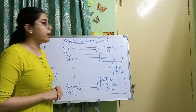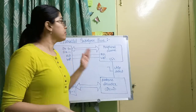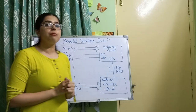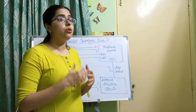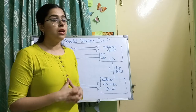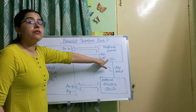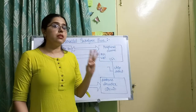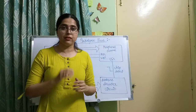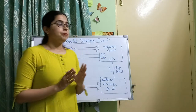If the data bus width is eight, then eight parallel lines are connected between the microprocessor and the peripheral device. Communication between the microprocessor and peripheral device takes place with the help of a control interface. The control signals are read-bar, write-bar, and chip-select-bar (device select bar) — three control signals that control communication between the microprocessor and the peripheral device.